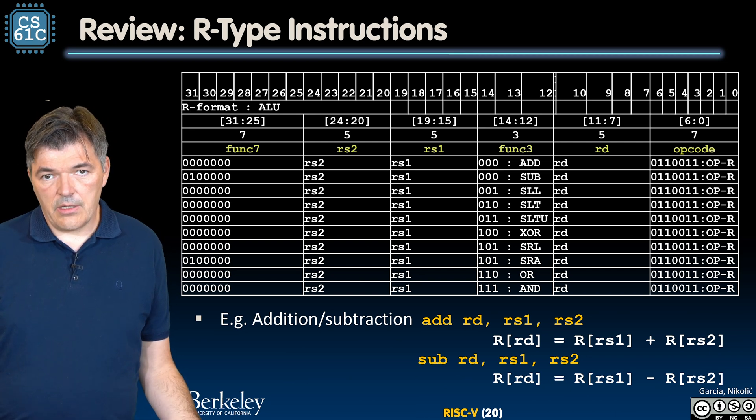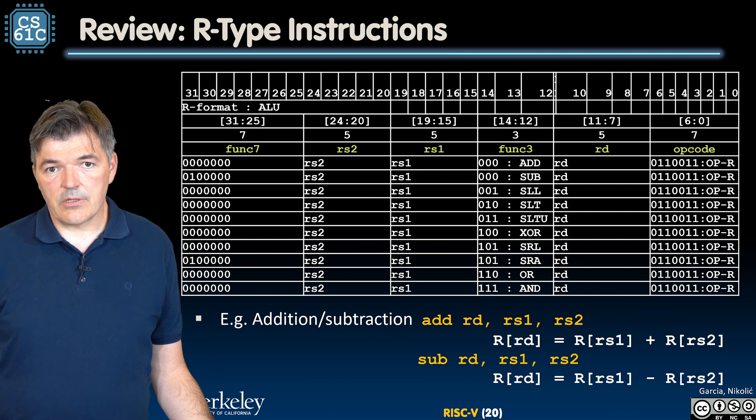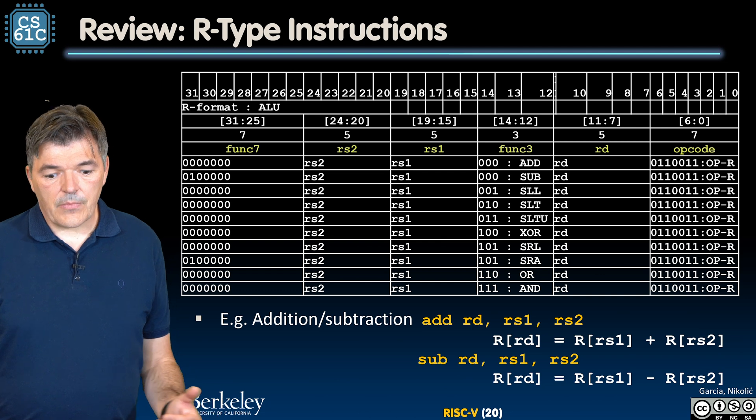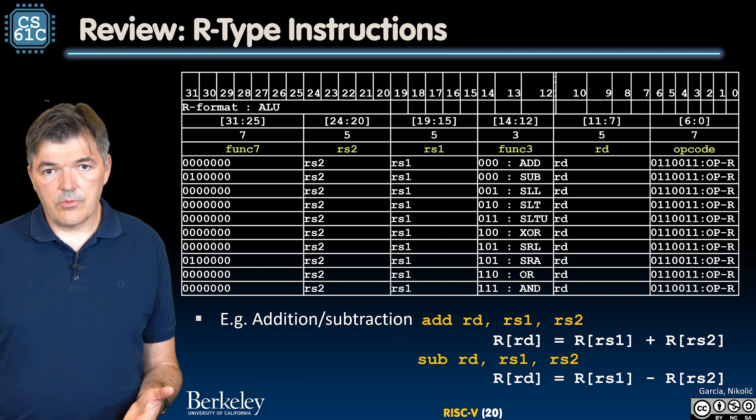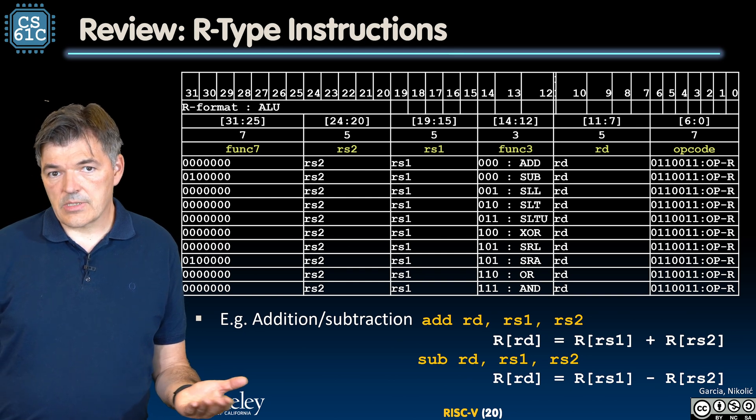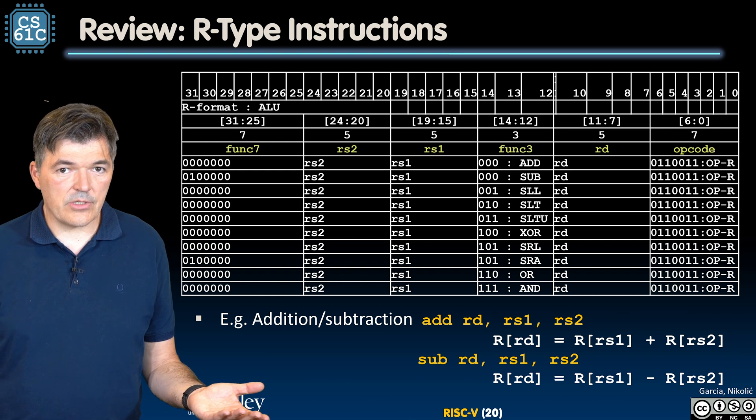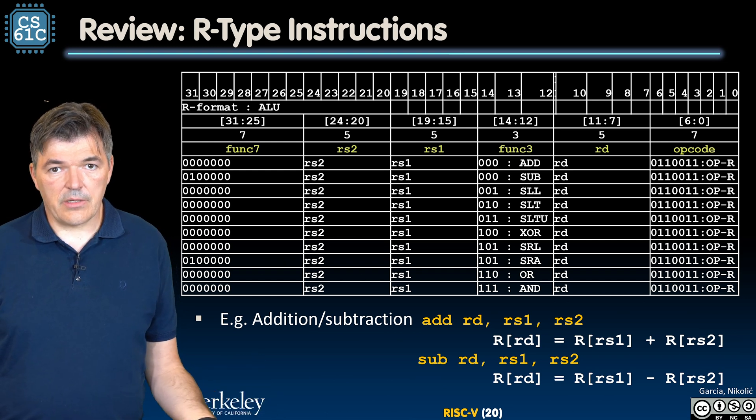So add rd, rs1, rs2 instruction will take the values in the register rs1 and rs2 and store the result in the register rd. Sub rd, rs1, rs2 instruction would subtract the value of register rs2 from the value of the register rs1 and store the result in the destination register rd.